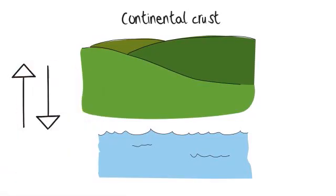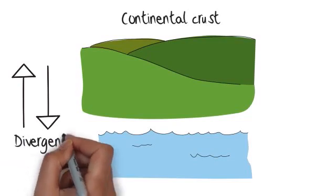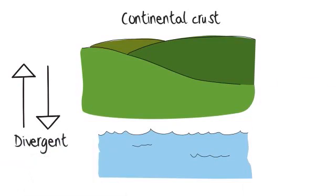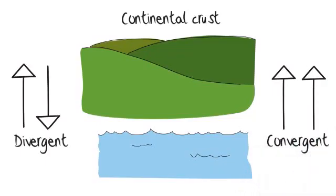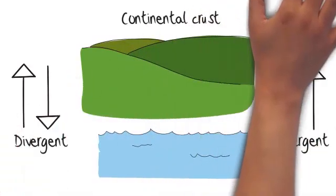The plates move apart at divergent or constructive boundaries. Likewise, if they move together, the boundary is known as convergent or destructive. Earthquakes and volcanoes are most likely to occur at these boundaries.